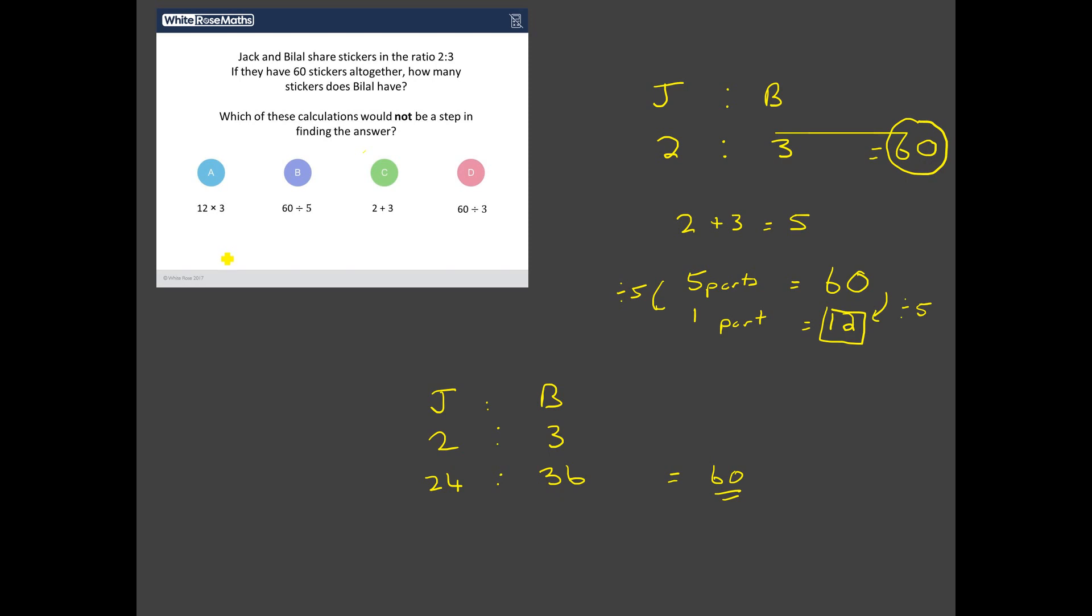So which of these steps have we used throughout this calculation? So 12 times 3, have I ever done that? Well, yeah, I have here. I have my 3 times by my 12 to get to my 36. So that, yep, that's been used. 60 divided by 5, did I ever do that? Well, yeah, that's that there. 60 stickers shared into five parts. 2 plus 3, did I ever do that? Well, yeah, I did to work out the total number of parts. So that was in there. 60 divided by 3. No, I never did that. Because even though it's Bilal has three parts, I don't have to share the 60 stickers by those three parts. I've got to remember that there's Jack's two parts as well. So I think that is the correct answer. That's the step that's never used. Let's see if we're right.